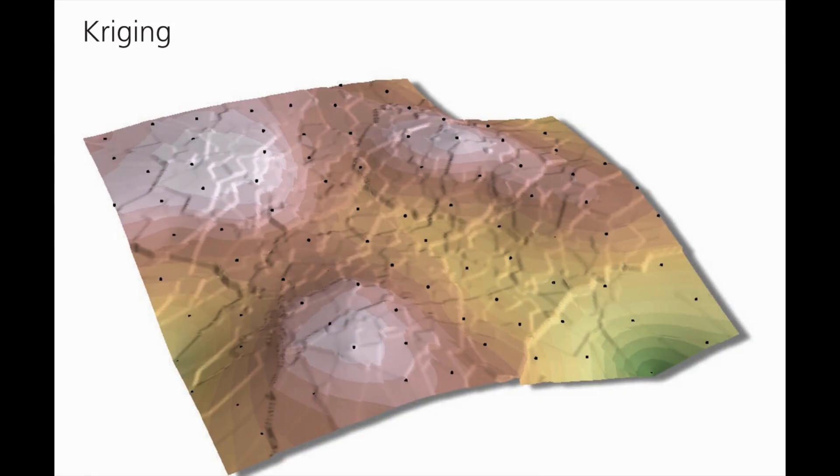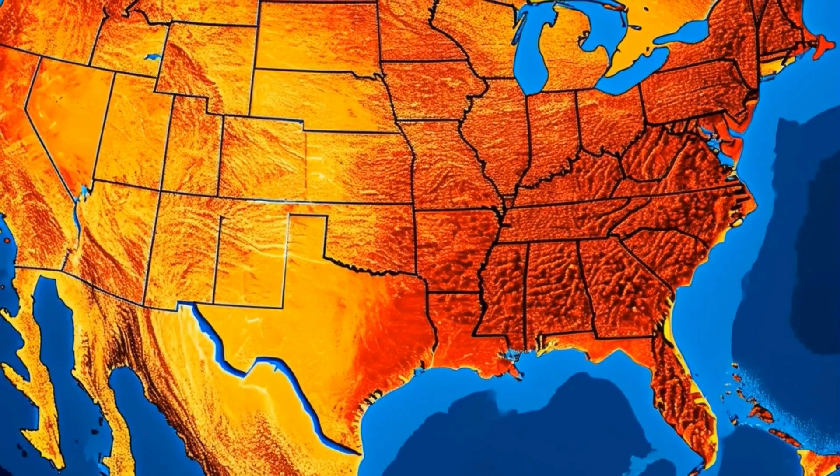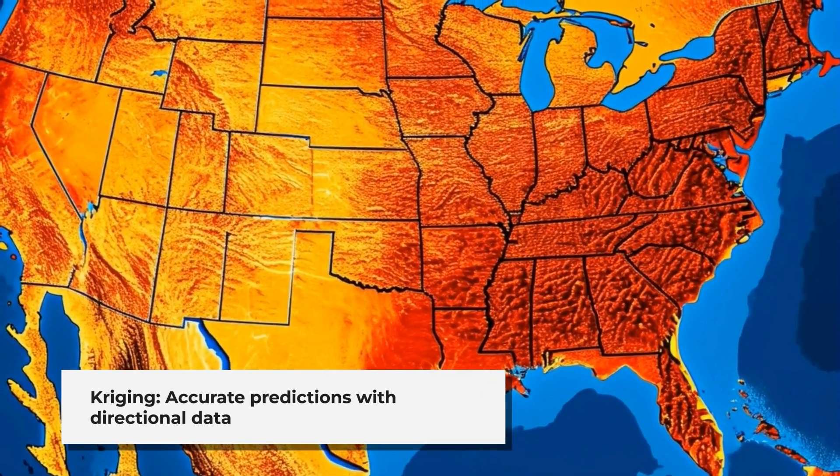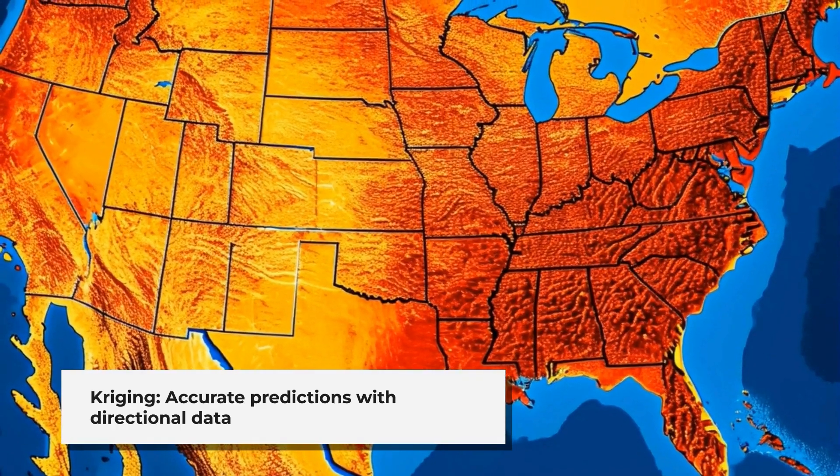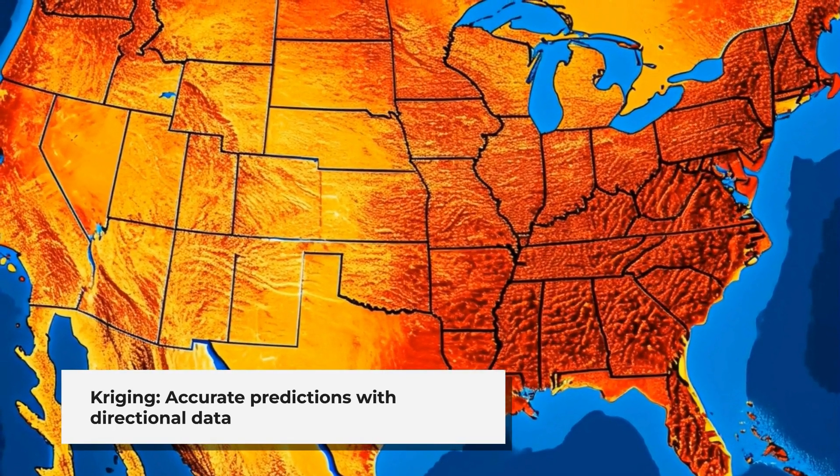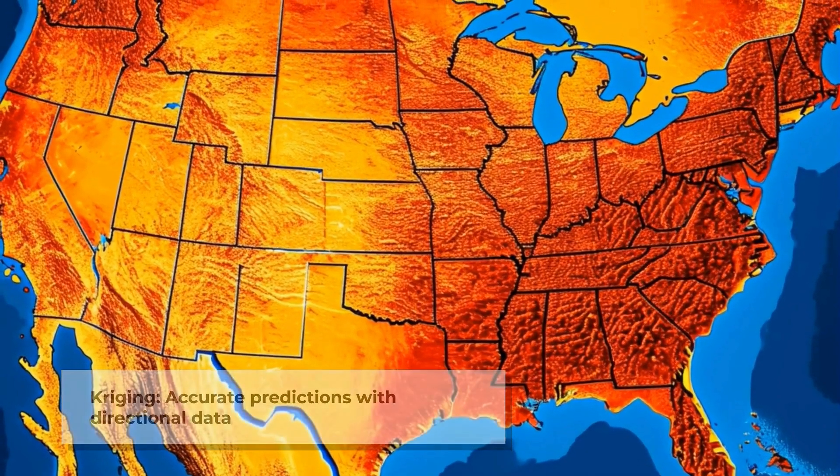Fourth, kriging. Kriging is a more advanced method that considers not only the distance between points, but also how values vary. It's more complex but very useful when you need highly accurate predictions.